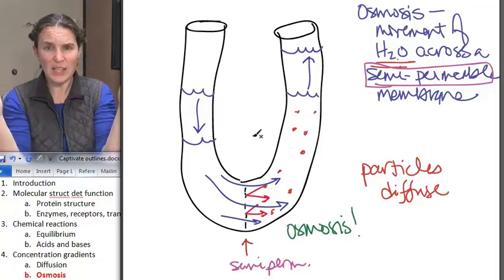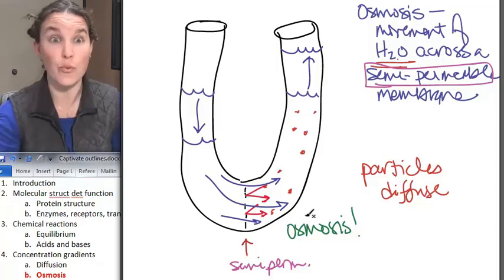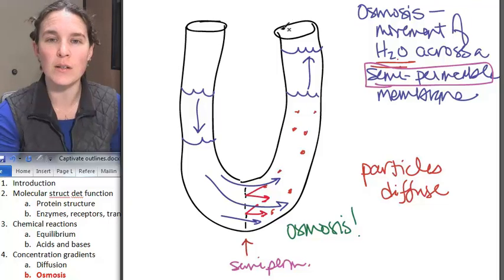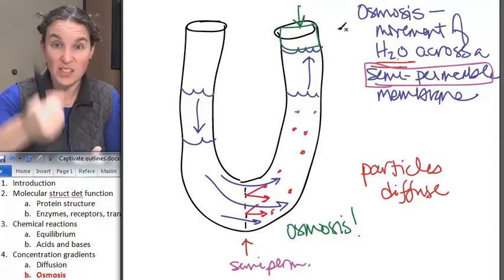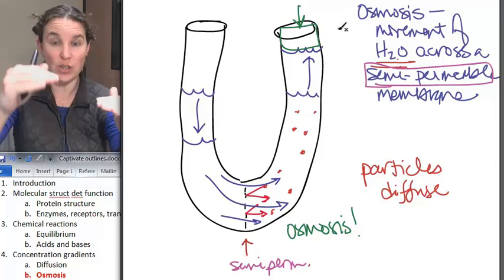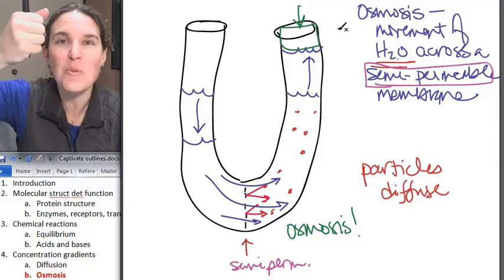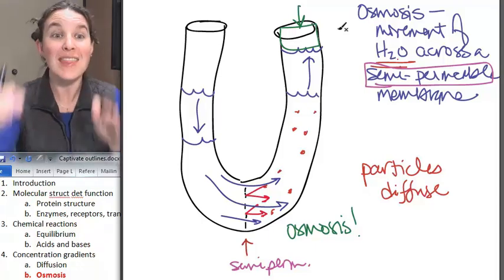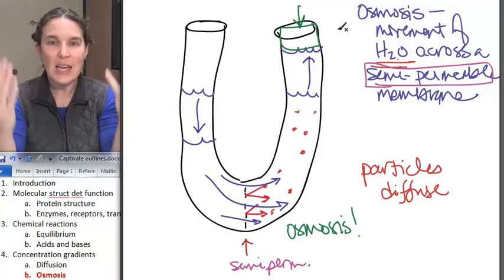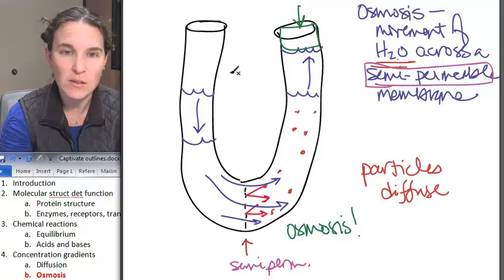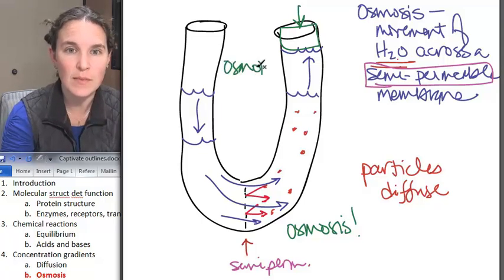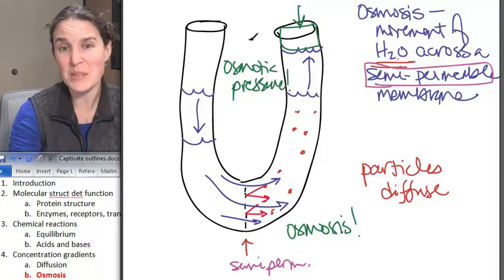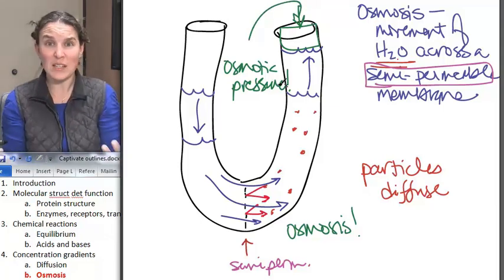Can you visualize that this could actually do work? There's actually pressure here. You could put a little stopper in this — pressure is just force per unit area. You could push down on the stopper and push that water back to the original equal heights. The amount of pressure you would have to apply to get it back to the original heights is the osmotic pressure in this little system. And if the osmotic pressure between two systems is different, then one of them is going to explode.